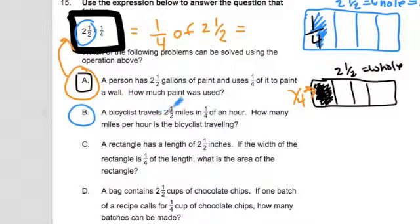A bicyclist travels two and a half miles in one-fourth an hour. How many miles per hour is my bicyclist traveling? Well, this is a little trickier. So visualize. They're only going, this is a one-fourth of an hour. That's like 15 minutes. So every 15 minutes, they're going two and a half miles.